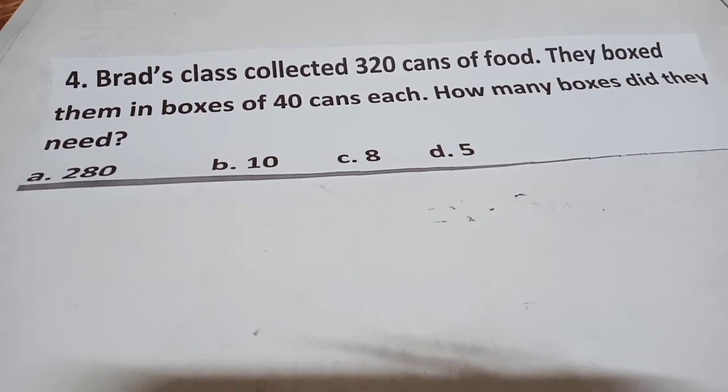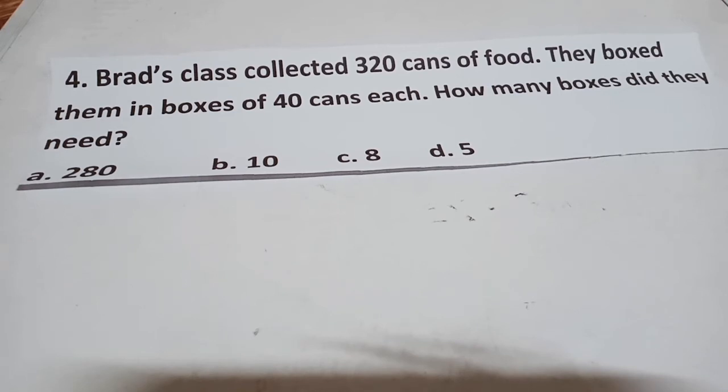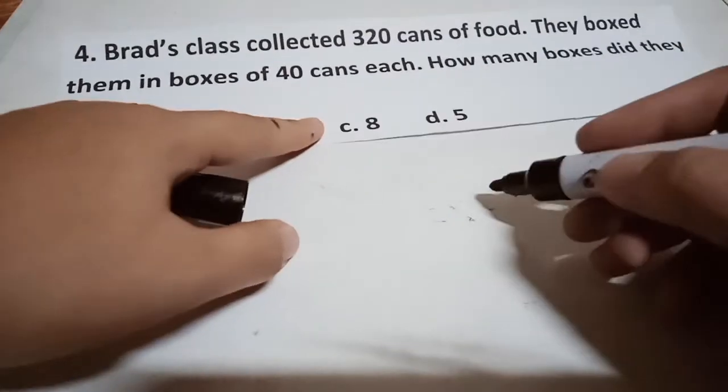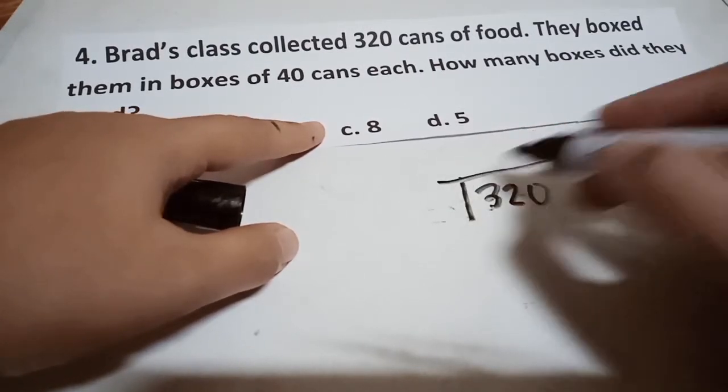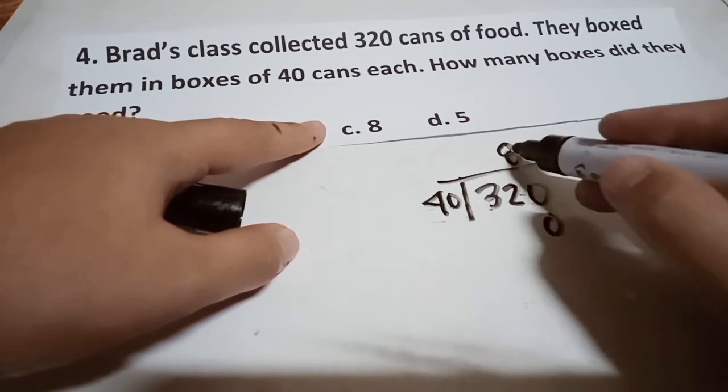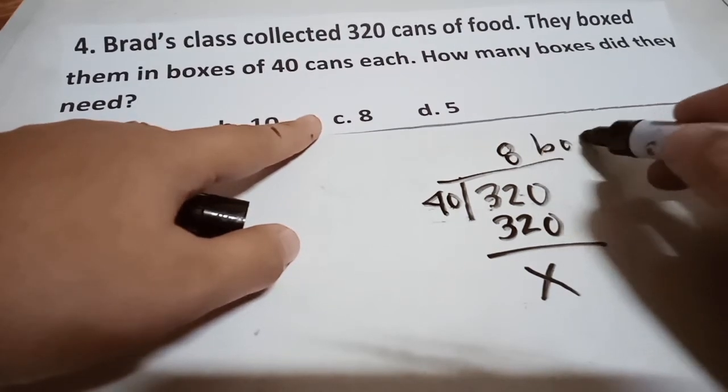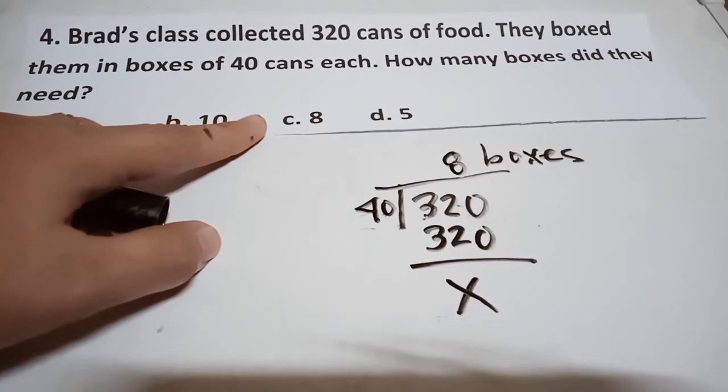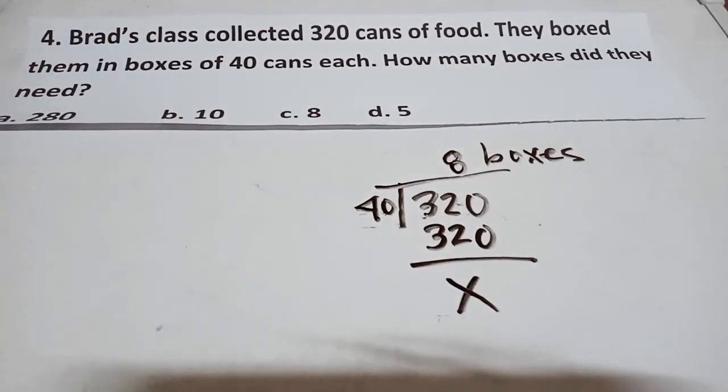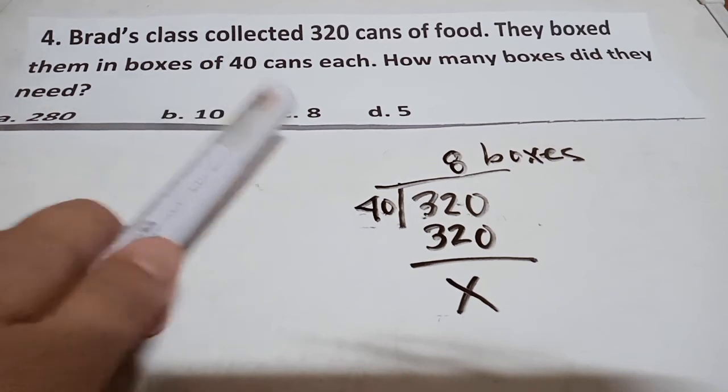Brad's class collected 320 cans of food. They boxed them in boxes of 40 cans each. How many boxes do they need? Take note guys, all you have to do is divide 320 cans of food in order to find the number of boxes. 320 divided by 40, we have 8. 8 times 4 is 32. The answer is 8 boxes needed in order to can a food. The best answer is letter C.